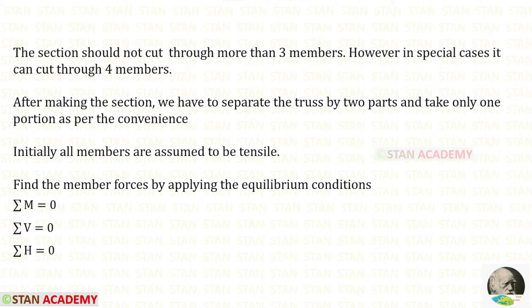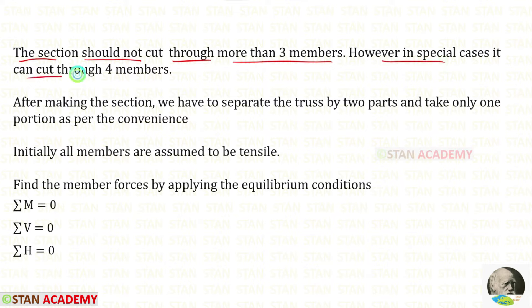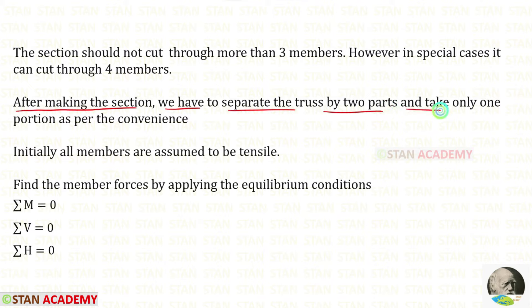Before analyzing, let us see the rules. The section should not cut through more than three members. This rule is according to the unknown member forces. In some cases we might have already found one or two member forces. In those special cases, the section can cut through four members. After making the section we have to separate the truss into two parts and take only one portion as per convenience. While doing the analysis we will know about this rule more.